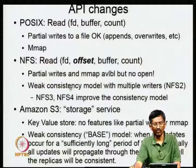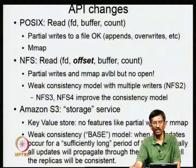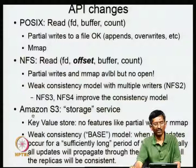However, some things are missing from the stateless design. For example, there is no open call because the server is not supposed to track which files are open. NFS has a weak consistency model with multiple writers. Later models like NFS 3 and NFS 4 improve this — NFS 4 has leases, meaning only the lease holder has write access until the lease expires.